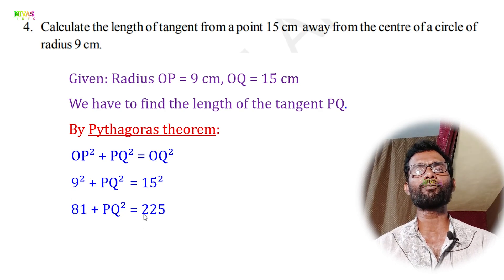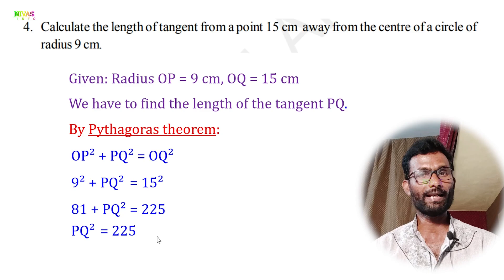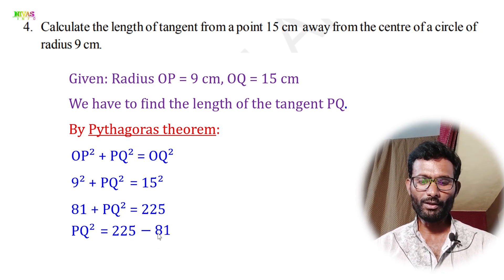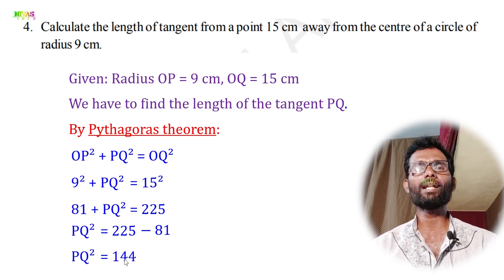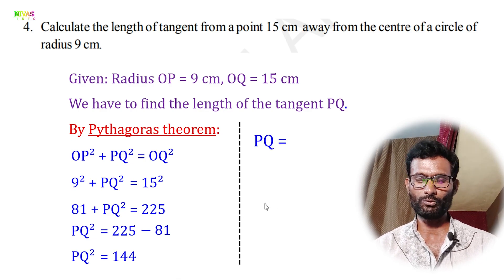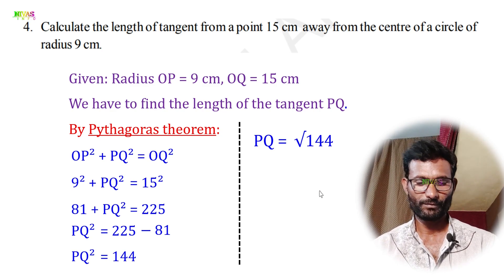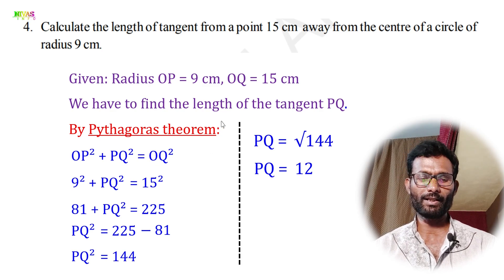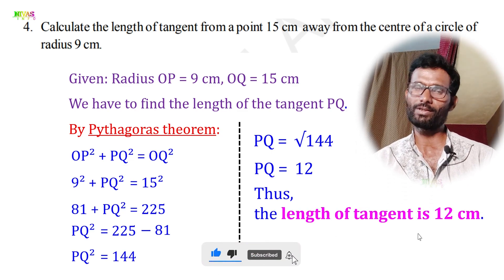PQ² = 144, so PQ = √144 = 12. Thus the length of the tangent PQ is 12 centimeters.